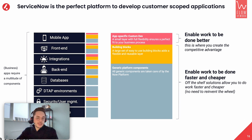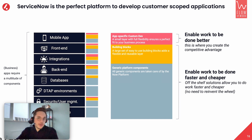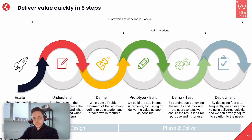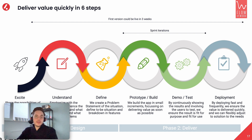The app-specific custom dev part on top of that is usually quite small, and therefore a custom application — depending on its complexity — can be built in just a matter of weeks. The process we use here is divided in two phases: the design phase and the deliver phase.